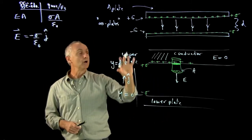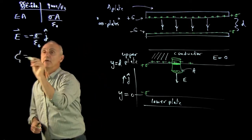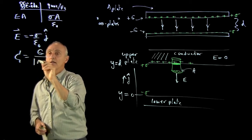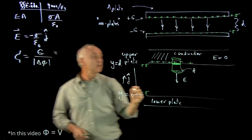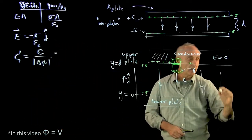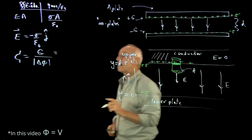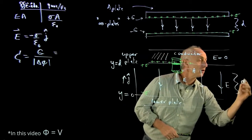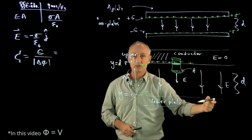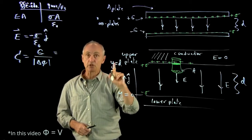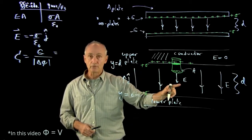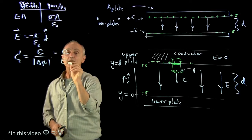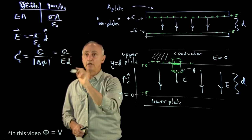We've done this calculation before. When you want to calculate the capacitance, it's q over the absolute value of the potential difference. In this problem we know the electric field is uniform, and the potential difference is just the magnitude of E times the distance d. Be careful, because for other capacitors E will not be uniform and you can't make this simple calculation — this is only for the parallel plate.